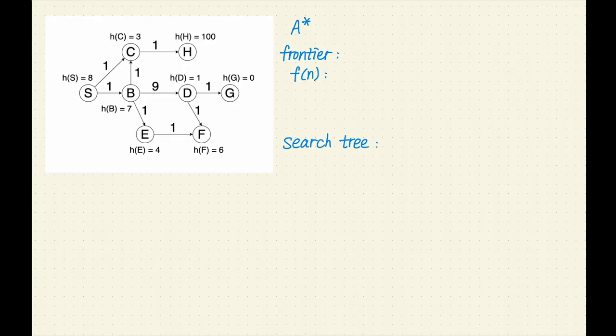Recall that A-star search chooses to remove the path with the lowest F value from the frontier. The F value is the sum of the cost and the heuristic values. I will use the same tie-breaking rule as before: order the paths by their last nodes and choose the path that comes first in alphabetical order.